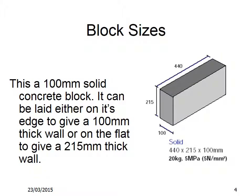This is a 100mm solid concrete block. It can be laid either on its edge to give a 100mm thick wall, or on the flat to give a 215mm thick wall. A dividing wall between a terrace of houses is usually a 205mm thick wall. We can see the dimensions here — it is 440mm long by 215mm high and 100mm thick.